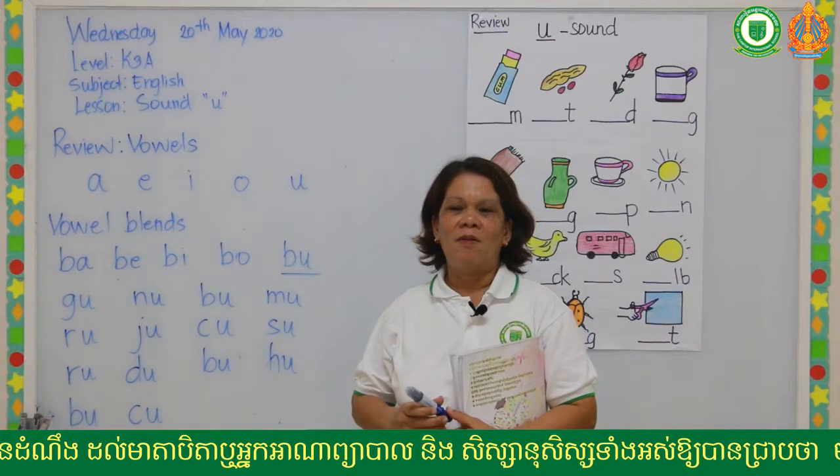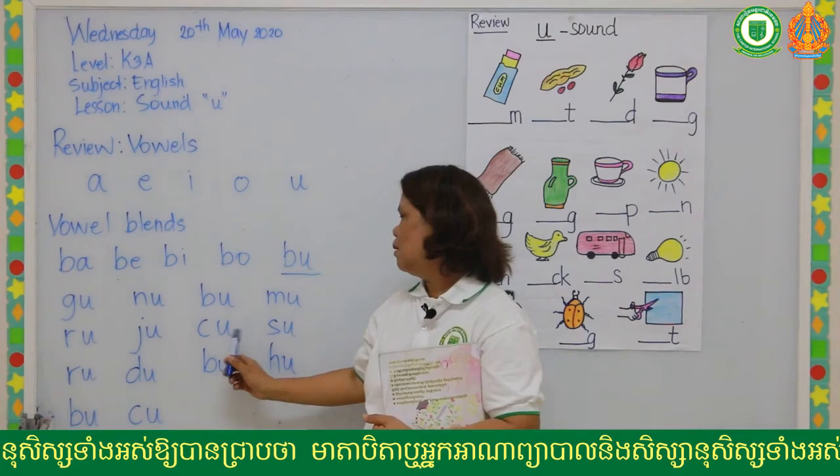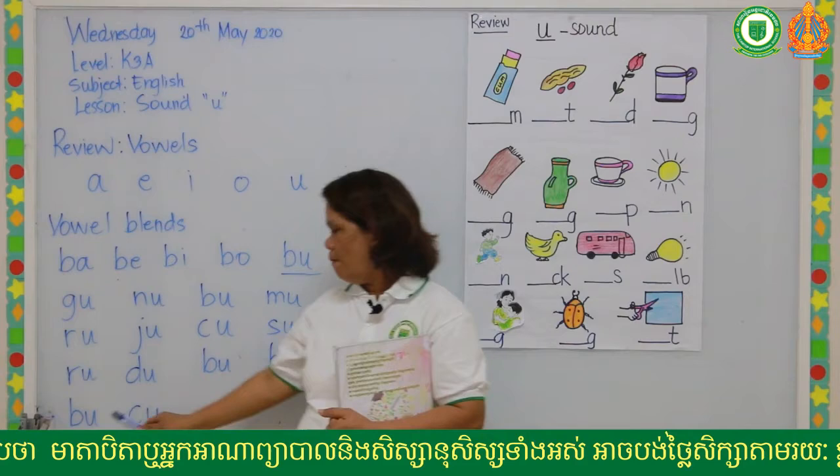This time we're going to blend consonants with the vowel 'a.' Like: ga, na, ba, ma, ra, ja, sa, ra, da, ba, ha, ja.